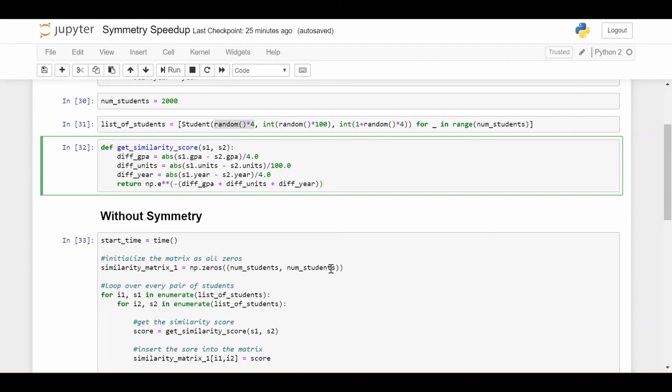Because if I ask you what's the similarity score between student 100 and student 200, it's the same thing as a similarity score between student 200 and 100. They should be the same, right? So we can use that symmetry to our advantage to speed up our code by something like a factor of 2.